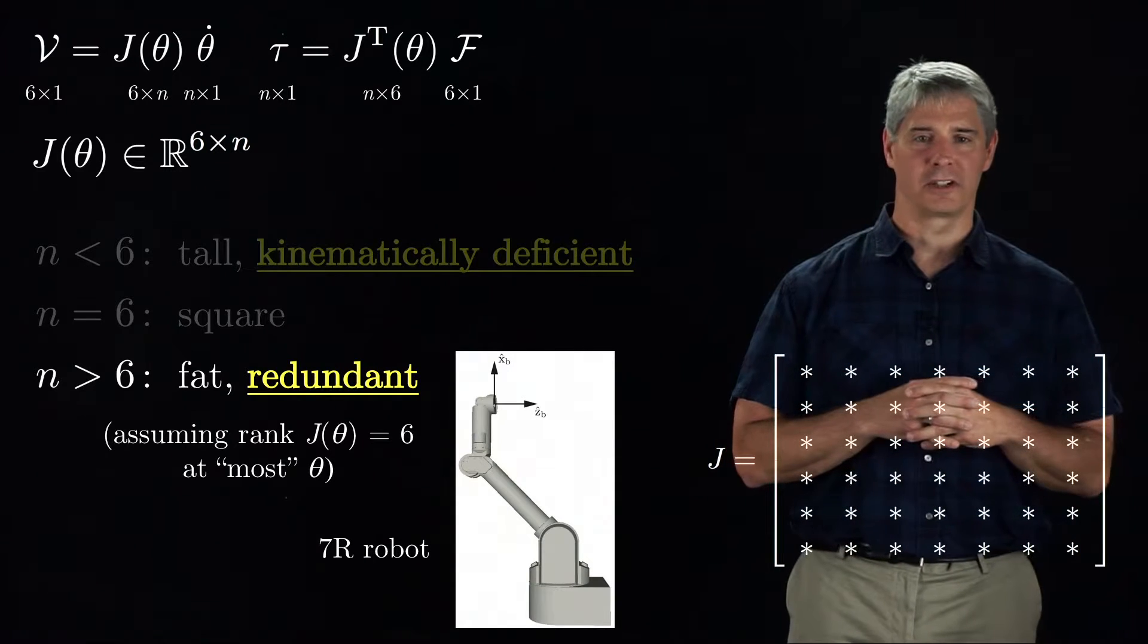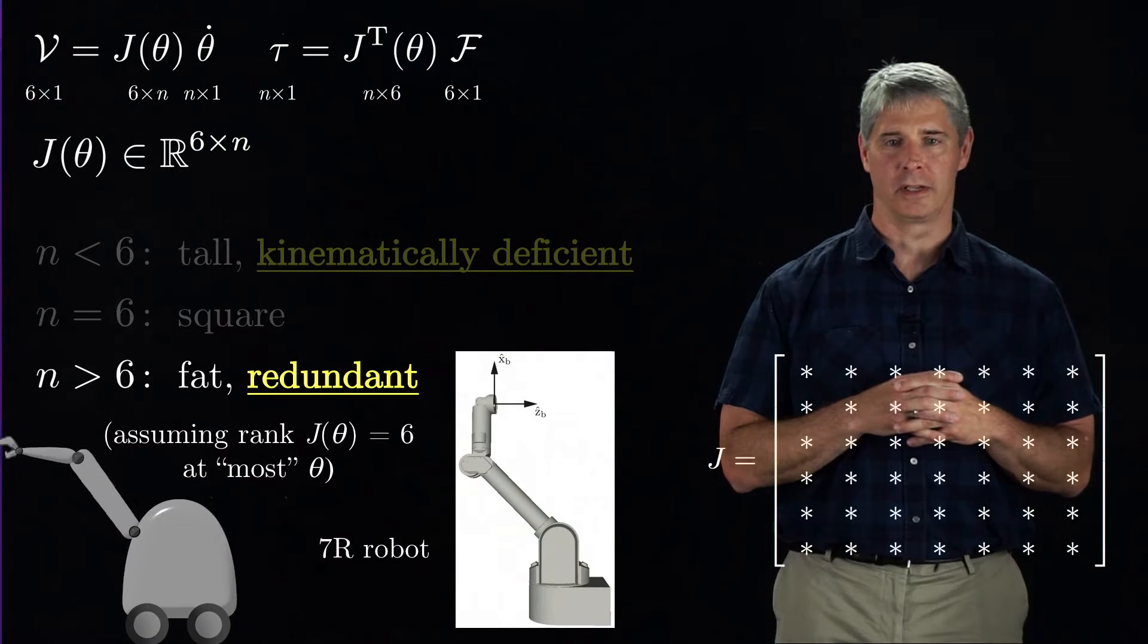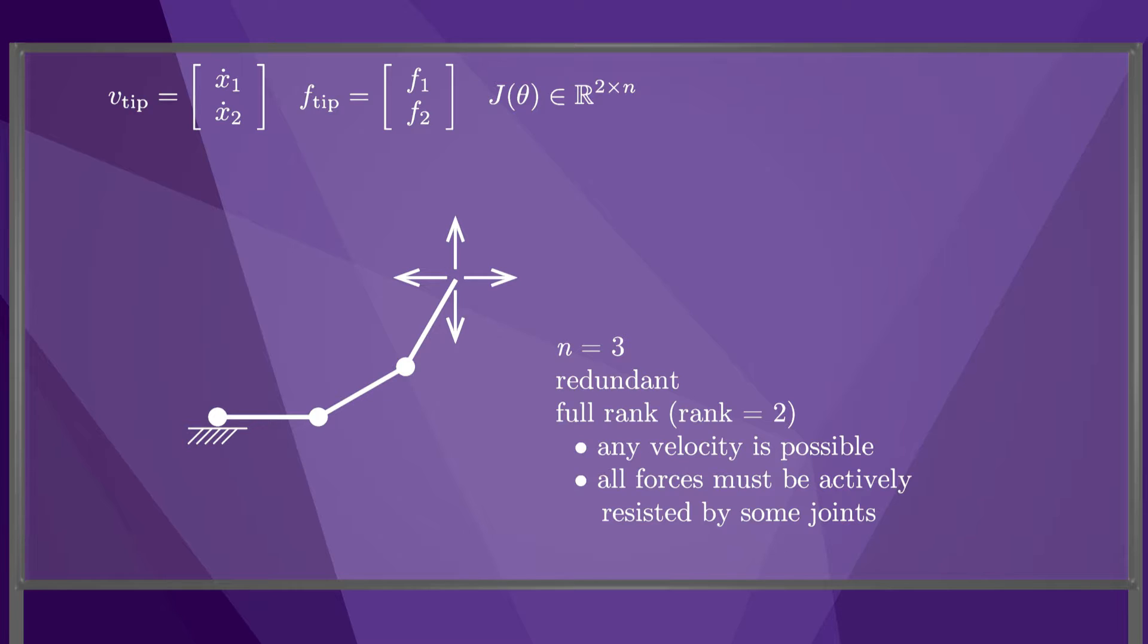It can be difficult to visualize 6-dimensional motion of a robot, so to illustrate the shape and rank properties of Jacobian, we will use a simple planar example. In this example, the end-effector velocity v-tip and force f-tip are two vectors, and Jacobian is 2 by n, where n is the number of joints. For the 3R arm shown here, the number of joints n is 3.